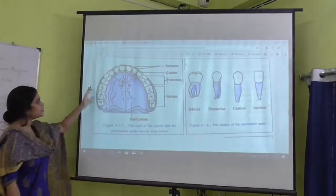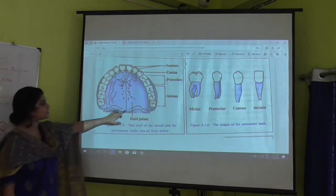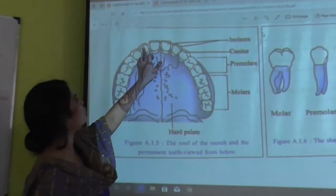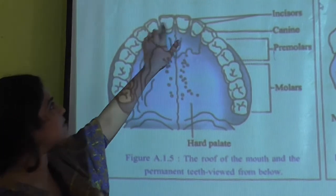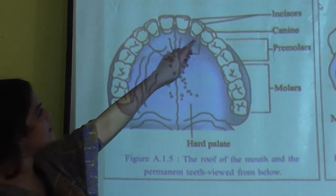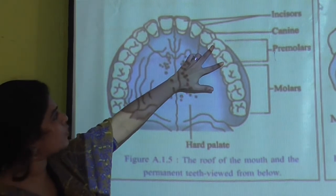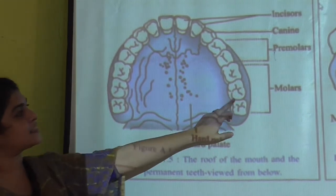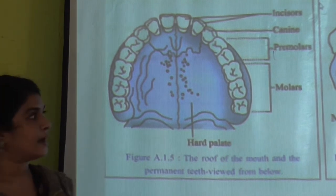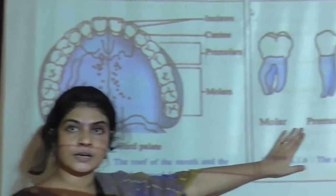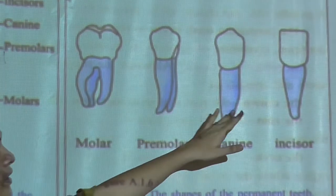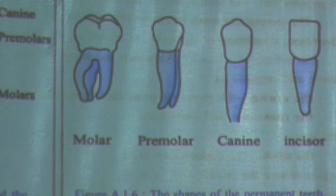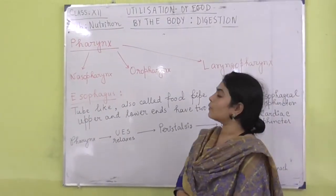Looking at the jaw diagram: the front four are incisors, then one and two on each side are canines, the next two on each side are premolars, and the last three on each side are molars, with the very last one being the wisdom tooth. I would like you to go through the diagrams of the different types of teeth provided.